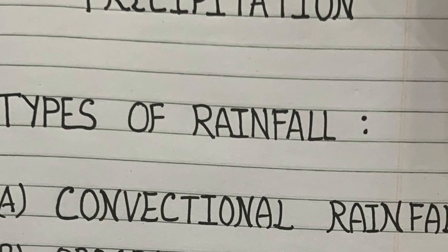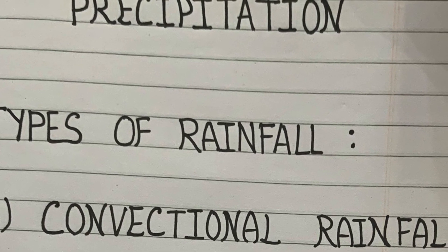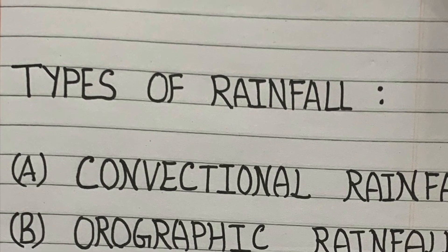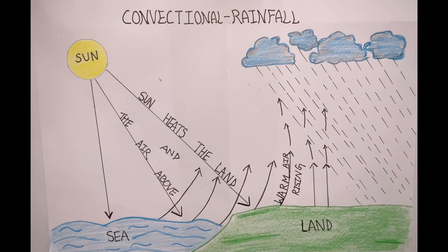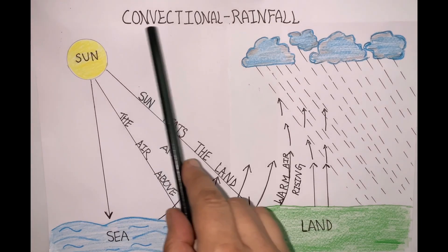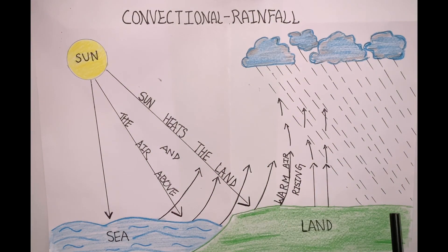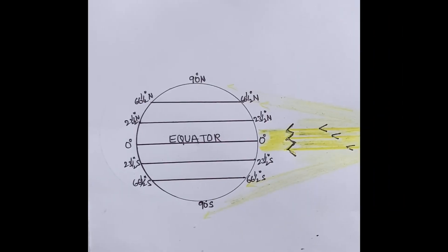In this video I will explain three different types of rainfall: convectional rainfall, orographic rainfall, and cyclonic rainfall. The first one is convectional rainfall. This type of rainfall is caused by the process of convection. The two factors necessary for this type of rainfall are intense heating of the surface and the abundant supply of moisture. This type of rain mostly occurs in the equatorial zone.